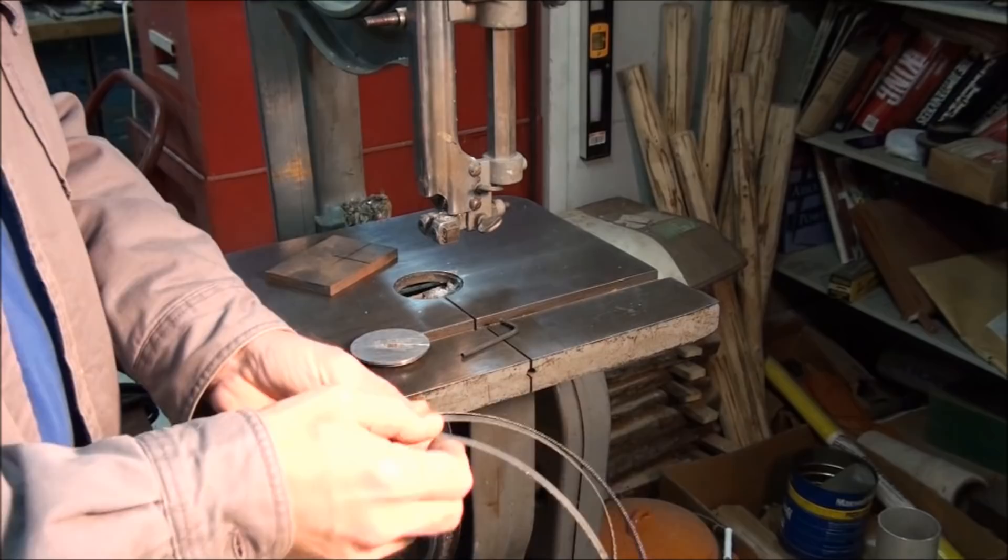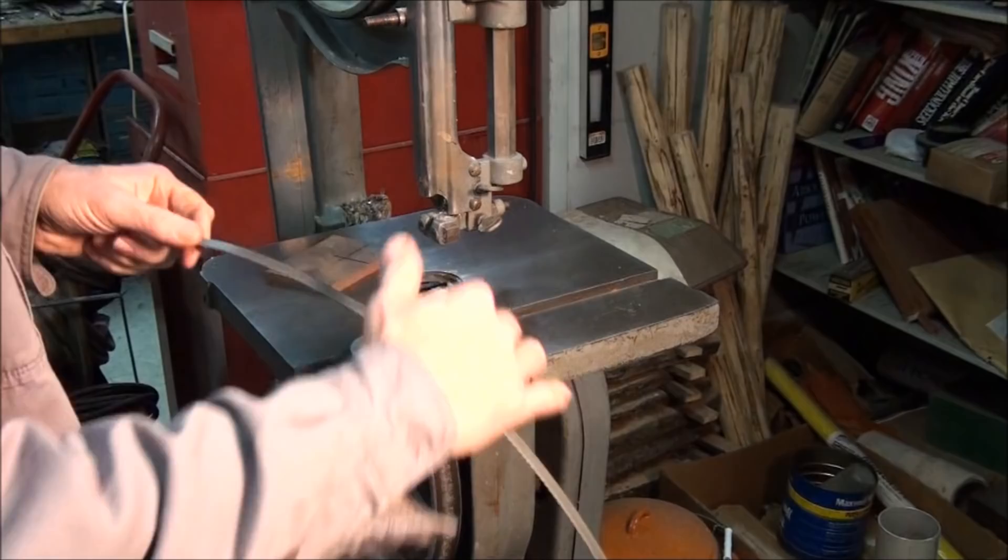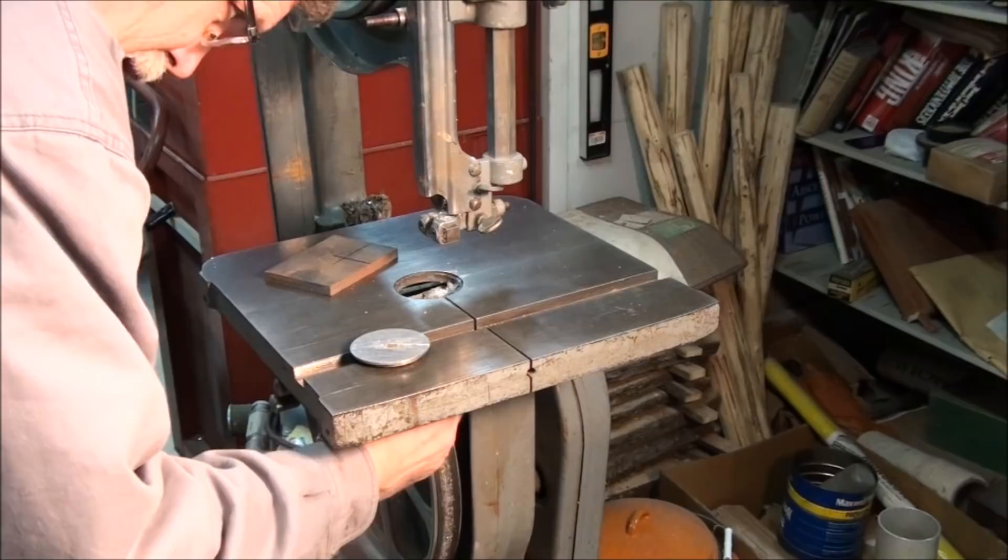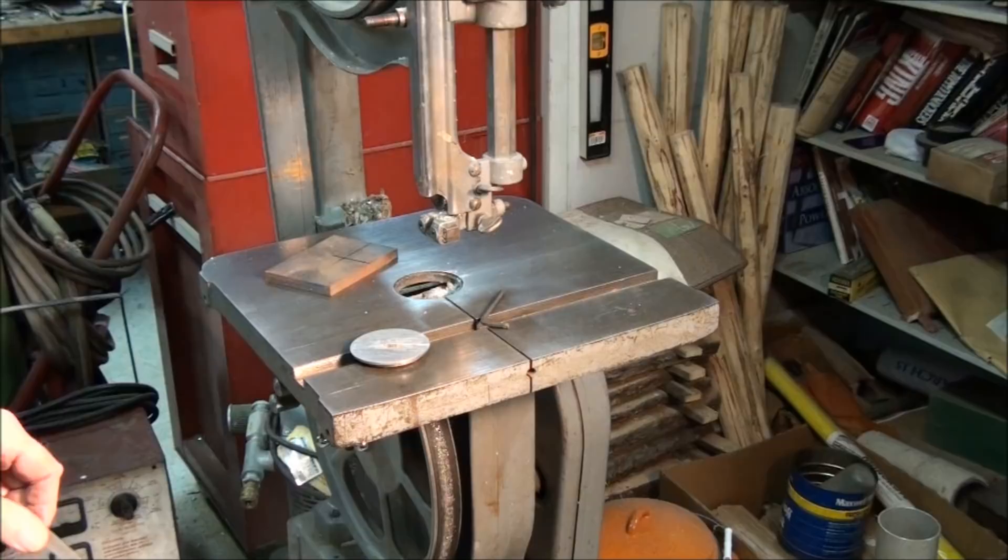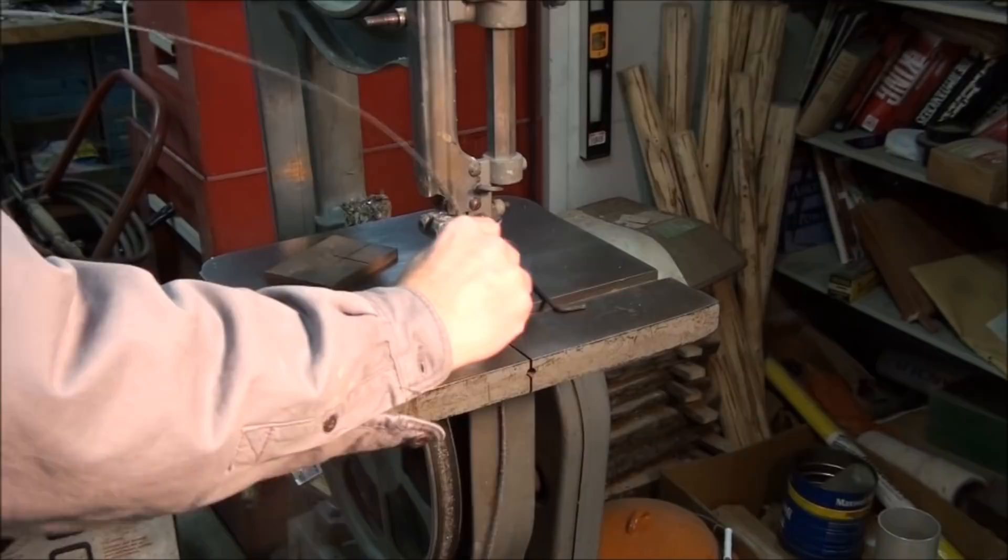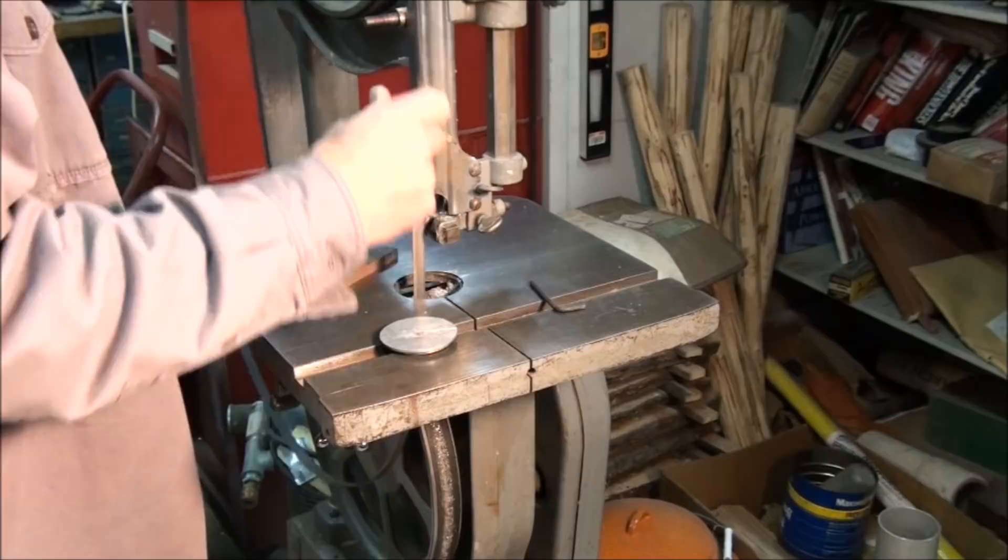So this blade I'm going to use is a little thicker than the one that was on it, which means I'm going to have to adjust the blade guides to clear it. So I'm just going to go ahead and loosen one of the guides and pull it out. Make plenty of room for the new thicker blade. Make sure your teeth are cutting on the down stroke. Don't cut very well backwards. Don't ask me how I know that. I think everybody's put a blade in upside down at one time or another.